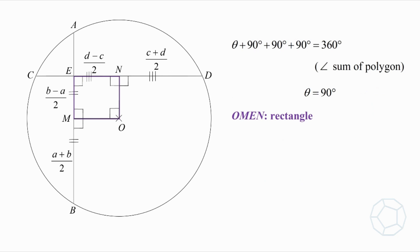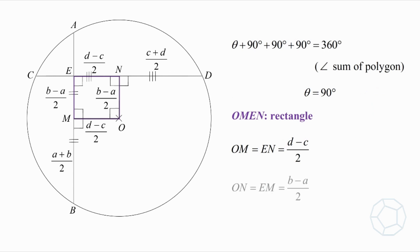This is a crucial step, because we have two pairs of equal opposite sides. They are: OM is equal to EN, which is (d - c) / 2, and ON is equal to EM, which is (b - a) / 2.